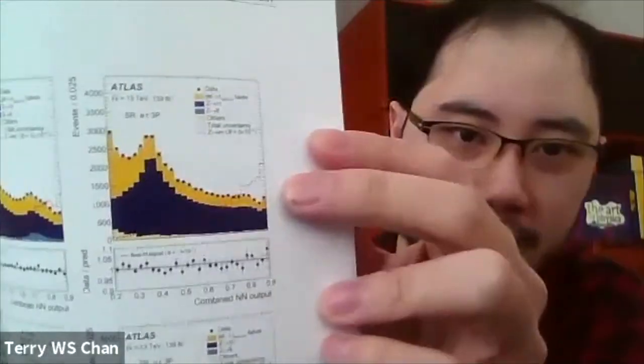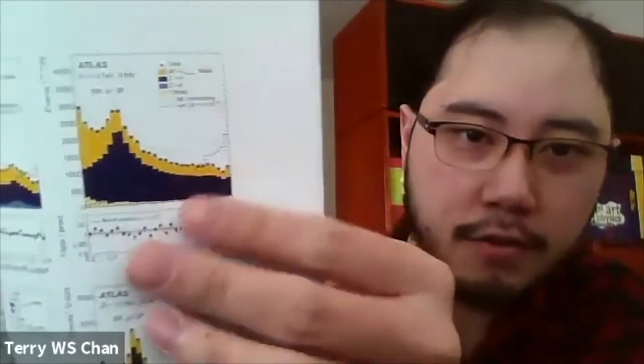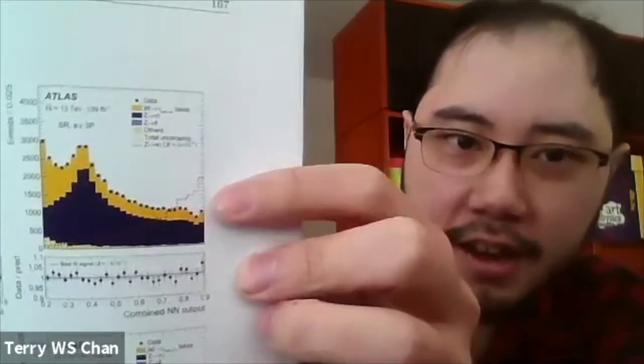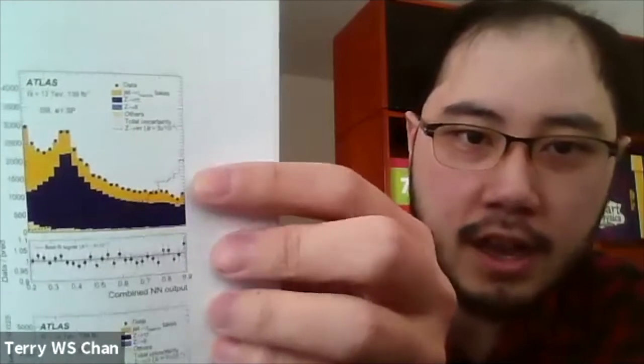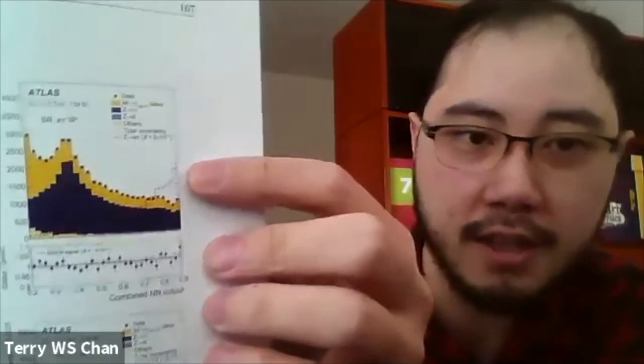Slightly disappointingly, I found no evidence for lepton flavor violating Z boson decays. What you can see here is that the colored histograms are the standard model background that we expected, and this red dotted line is what we expect if the signal exists. The data points agree pretty much with the standard model background, and so there's no clear evidence that the lepton flavor violating decays occur.